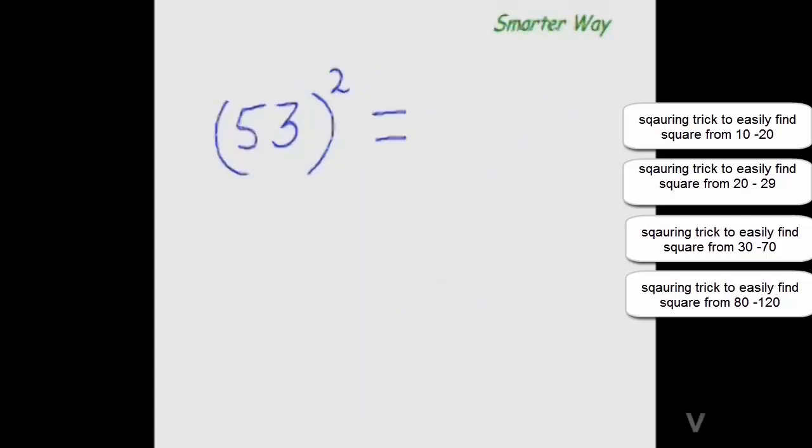So now you find out what is the square of 53. So 53 is 3 more than 50. So add that 3 to 25 that is 28 and the square of 3 is 9 so 09 this is your answer. Isn't that easy and effective.